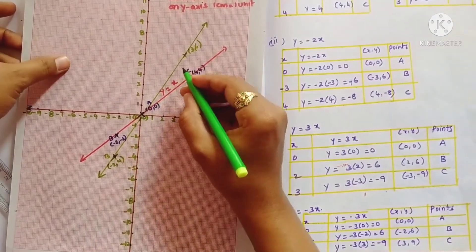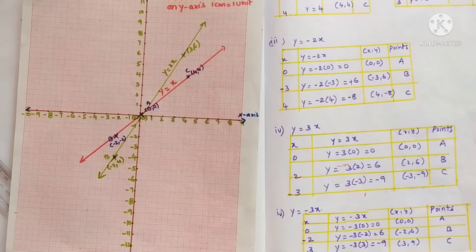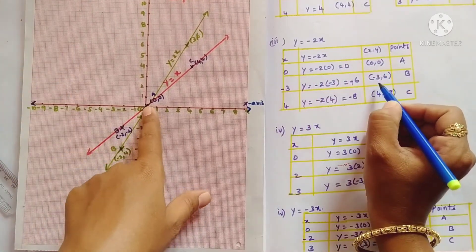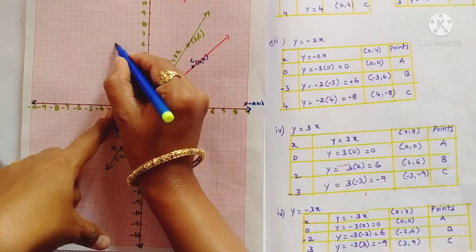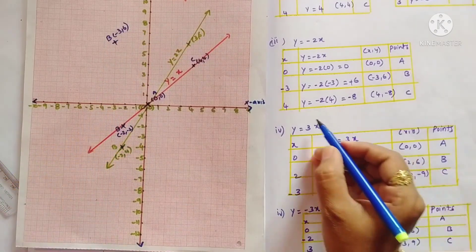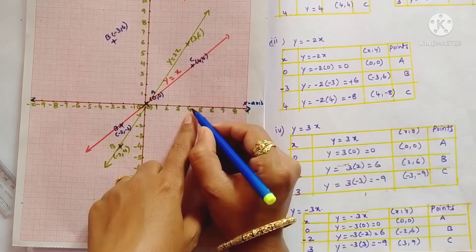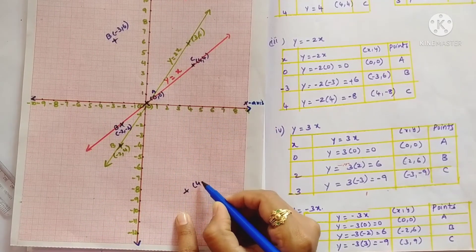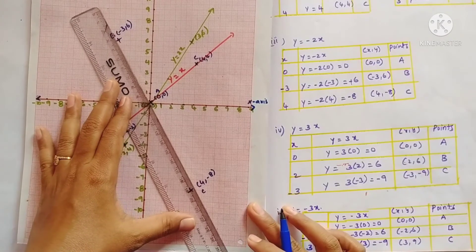For the third graph, y = -2x: point A is (0, 0), point B is (-3, 6) — plot -3 on x-axis and 6 on y-axis. Point C is (4, -8) — plot 4 on x-axis and -8 on y-axis. Join these three points using a scale.